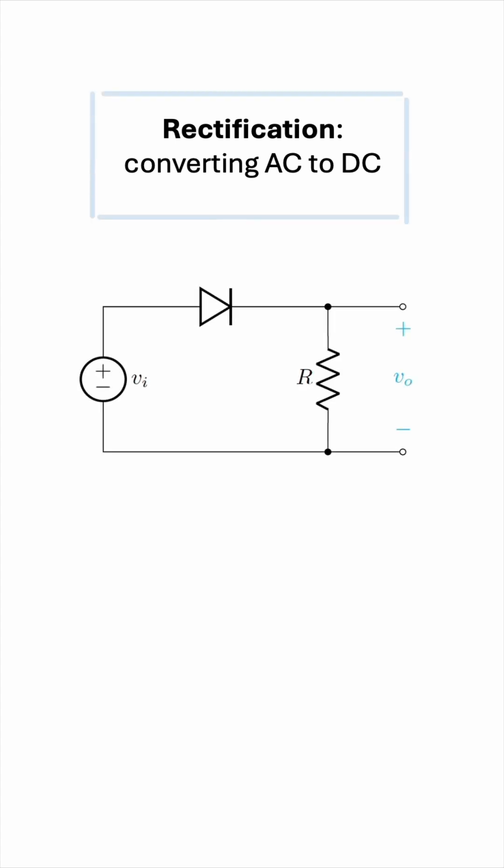In this circuit, if the voltage source is a pure sinusoid, like this, then the diode will be forward biased during the positive half cycles of the waveform and reverse biased during the negative half cycles.